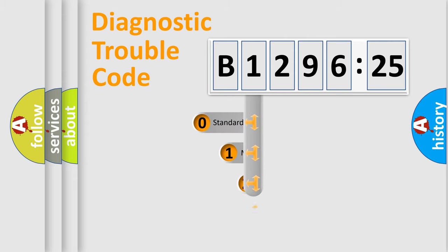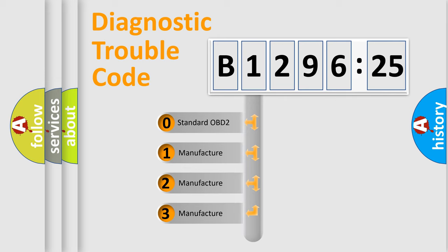Powertrain, Body, Chassis, and Network. This distribution is defined in the first character code.